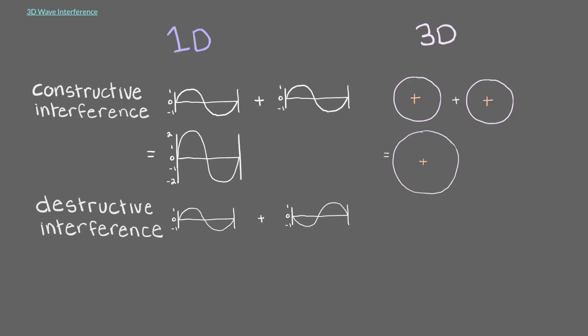Similarly, when two out-of-phase 1D waves combine, they cancel out. And the same occurs for 3D waves when the spheres cancel each other out.